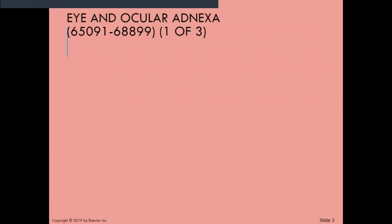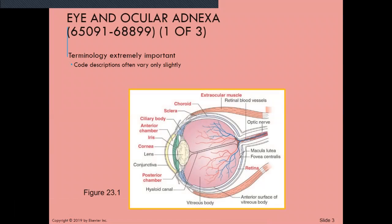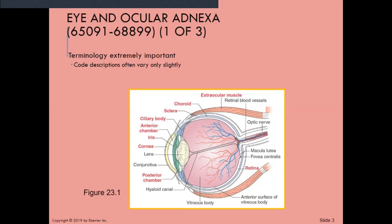We're talking about the eye and ocular adnexa on page 574. The eye and ocular adnexa subsection includes codes 65091 through 68899. Some categories are a little different. For example, the subheading eyeball has categories for both removal of the eye and removal of foreign bodies. The terminology is very, very important in this section. Code descriptions often vary only slightly. That is found in that very first paragraph on page 574.